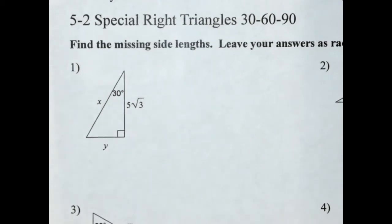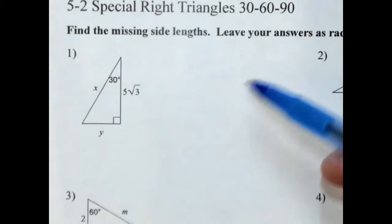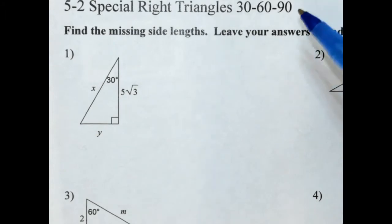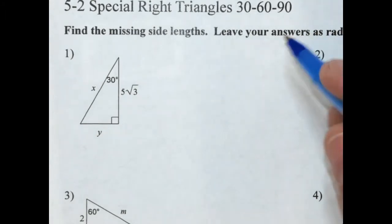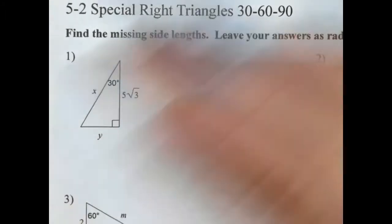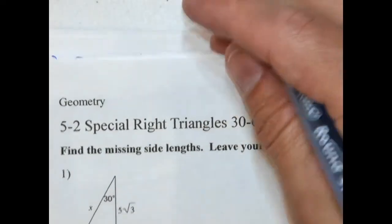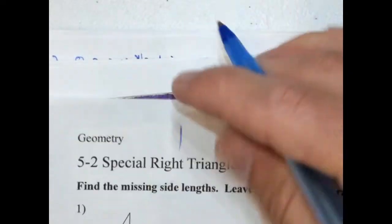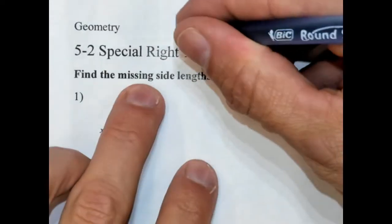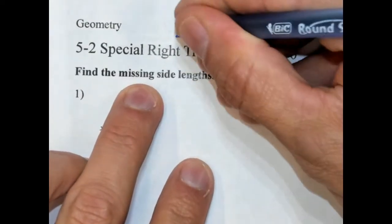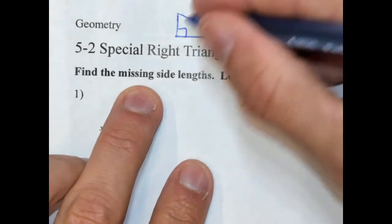Hi everybody. Today we're going to talk about the 30-60-90s. I did a review yesterday on the 45-45-90s, so now we're going to talk about the 30-60-90s. The 30-60-90s are the other set of special right triangles. So we did 45-45-90s, now we're doing 30-60-90s.